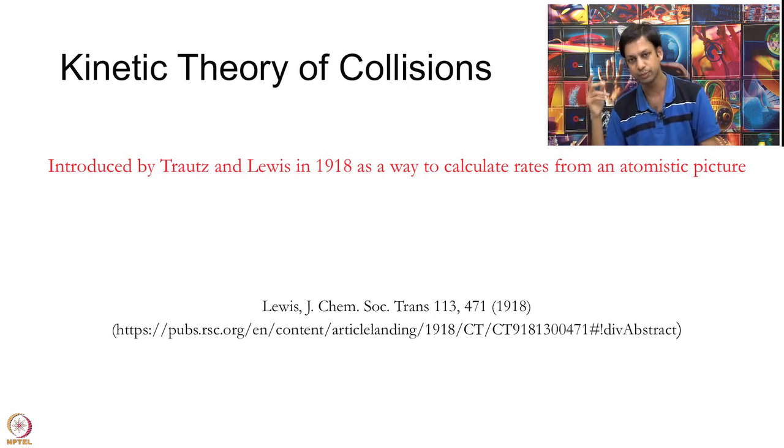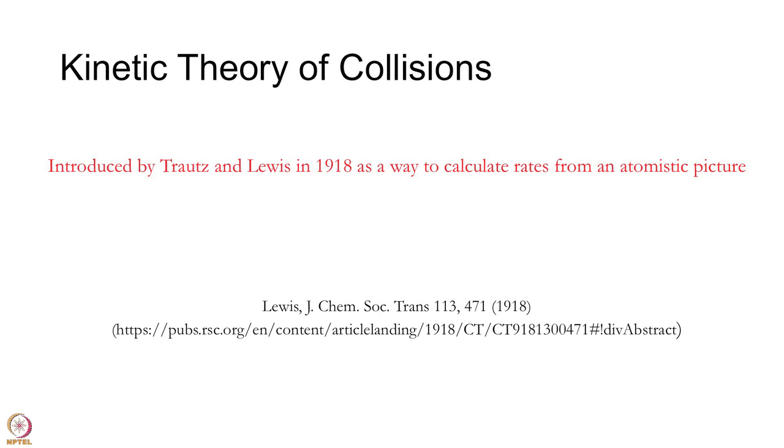Arrhenius being the genius, he had the vision in late 1800s to postulate that the transition state exists. What he did not provide is how to calculate the rate constant. He gave a formula but he did not give how to actually get the parameters that are there in that formula. That is what preceded after Arrhenius. People were trying to figure out, well you give me a reaction and I will try to find out what that rate constant is going to be. In this time the idea of atoms and molecules were also emerging. Dalton happened only a hundred years before that. People had figured out, Trautz and Lewis particularly, one way to find this rate constant from an atomistic picture.